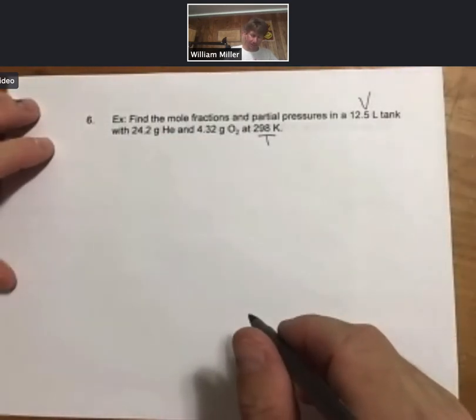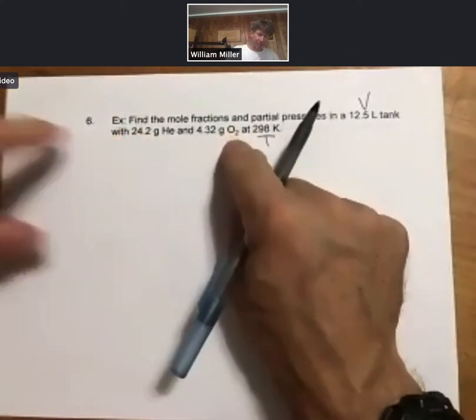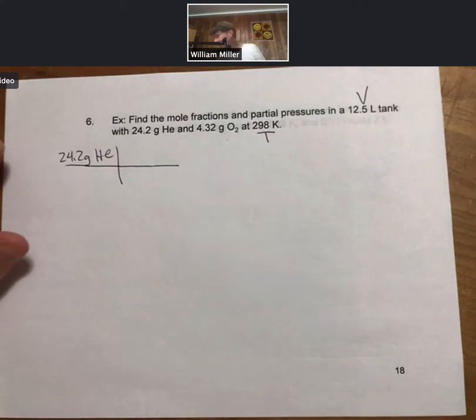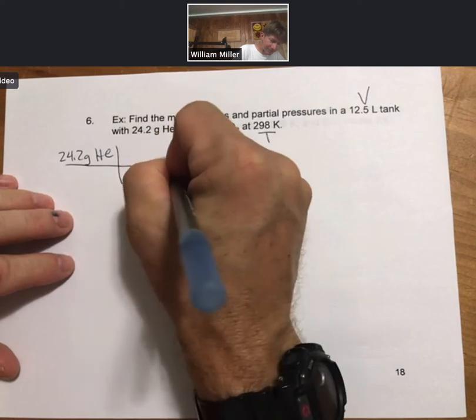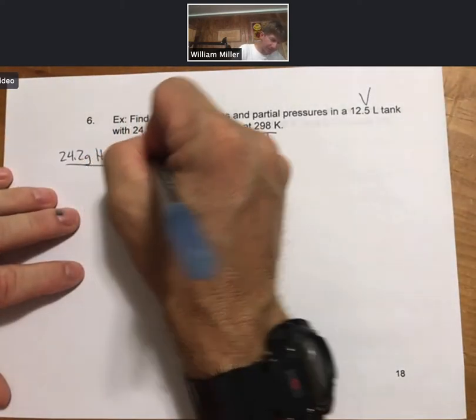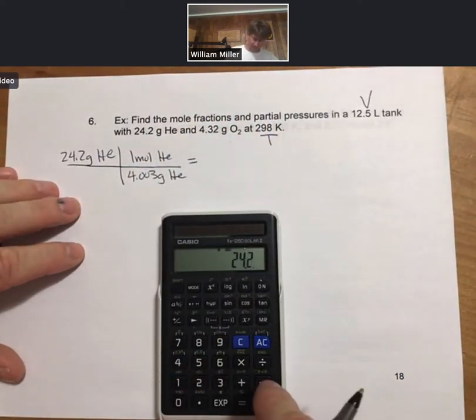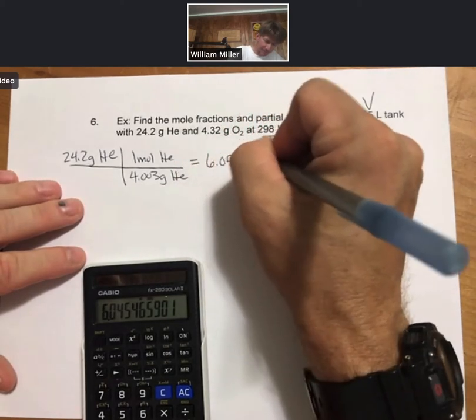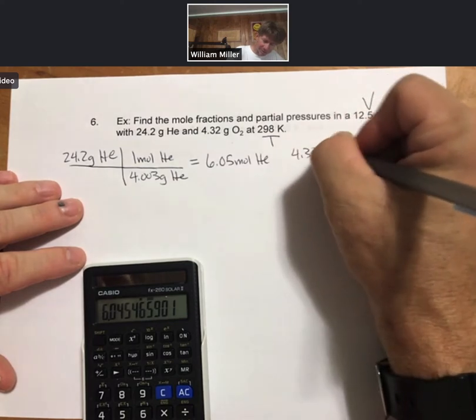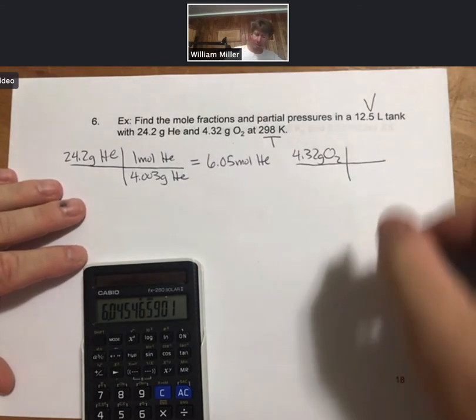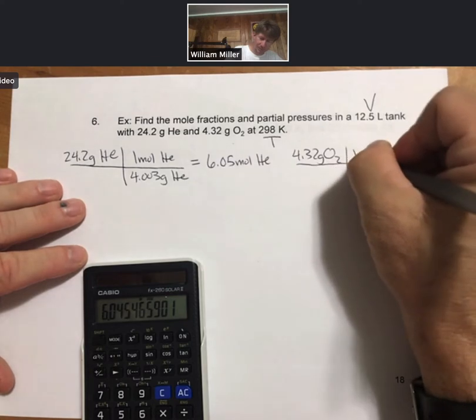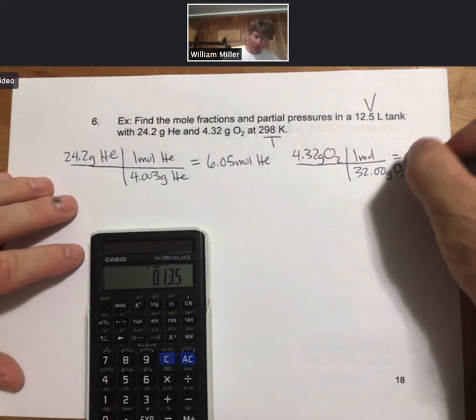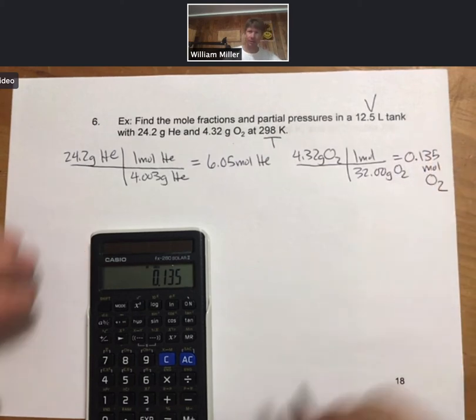All right, so I have grams, so I'm going to get moles first. And 4.003 grams of helium for one mole. 6.05. 4.32 grams of oxygen and 32.00 grams per mole. 0.135 moles of oxygen. All right, so I got my moles.